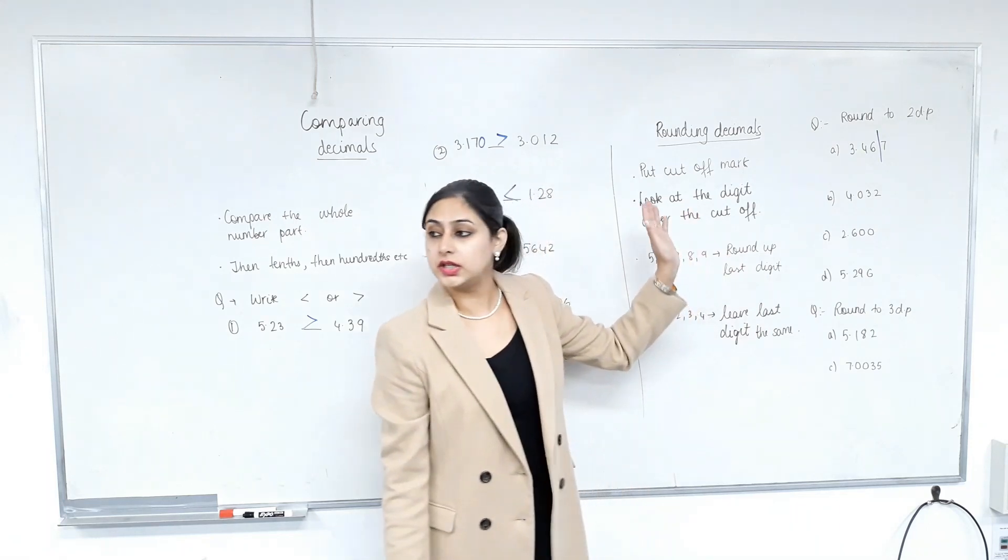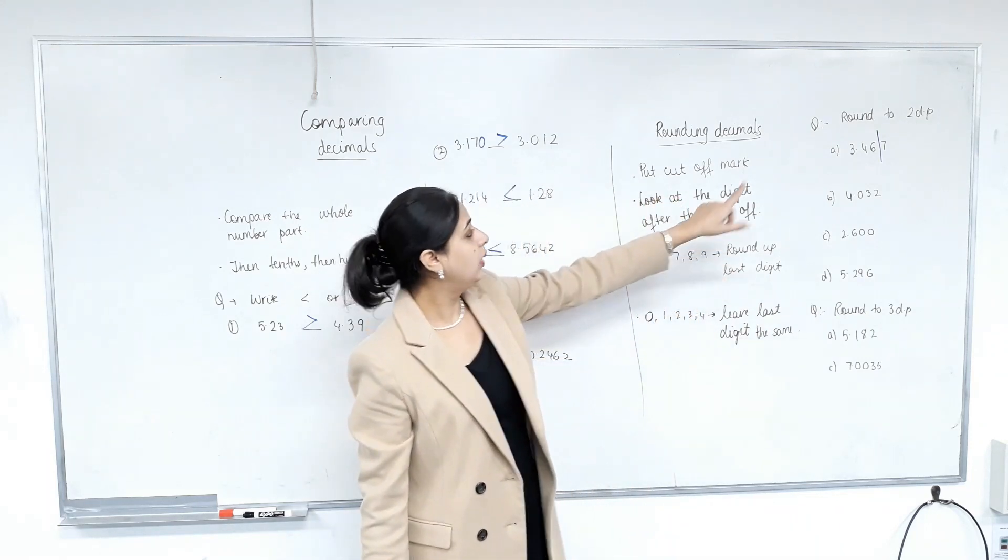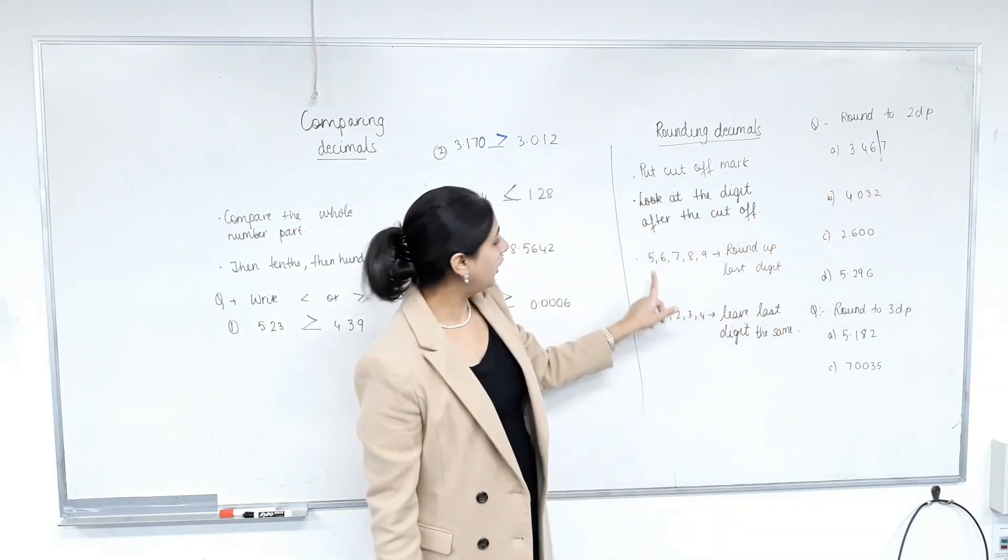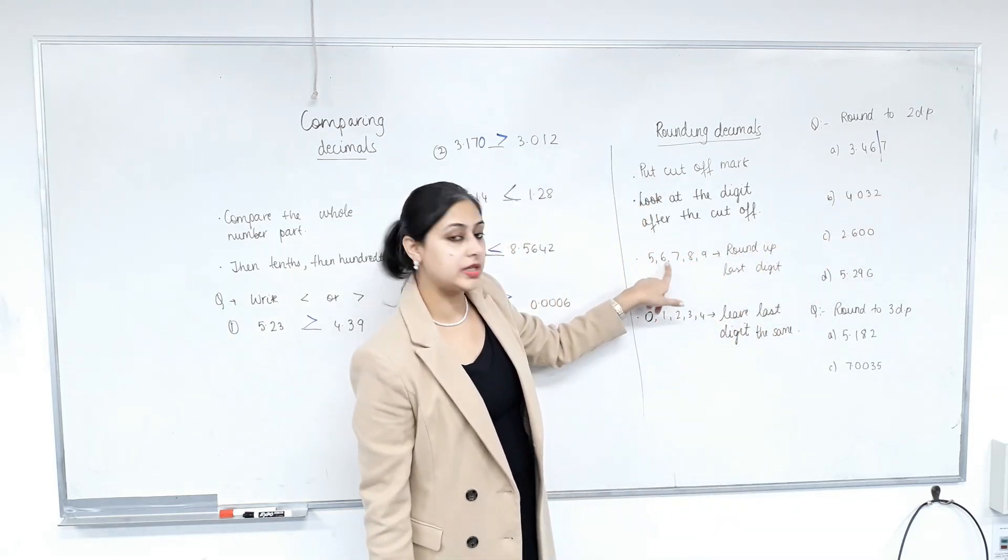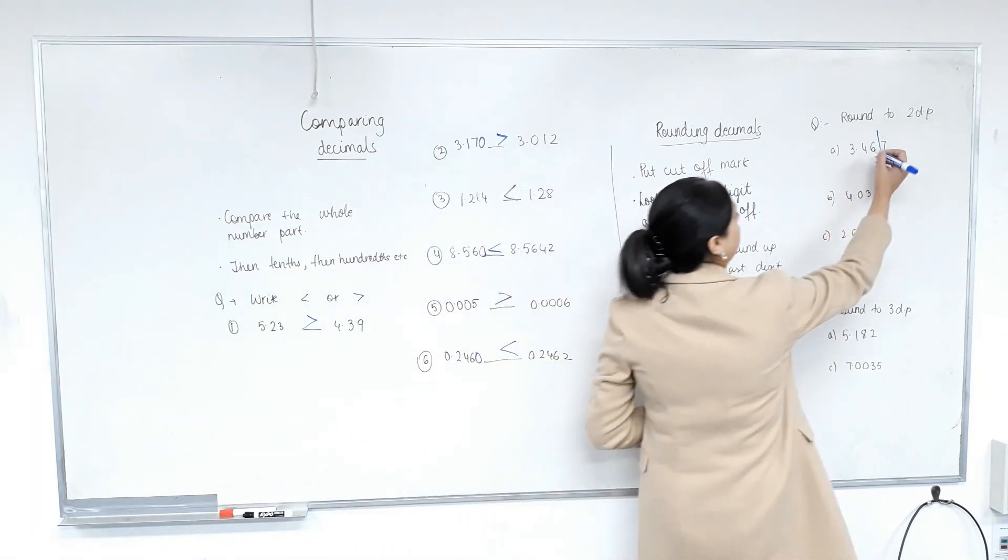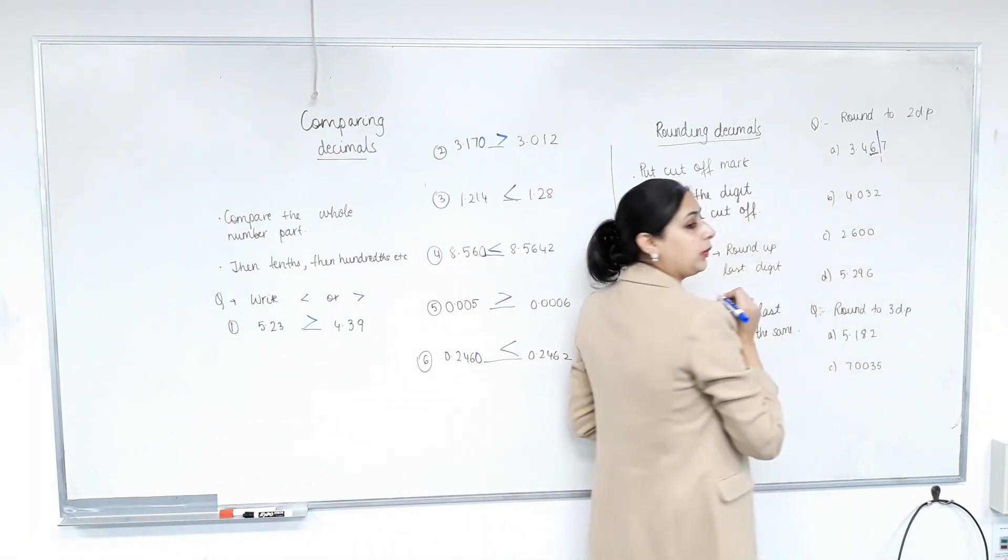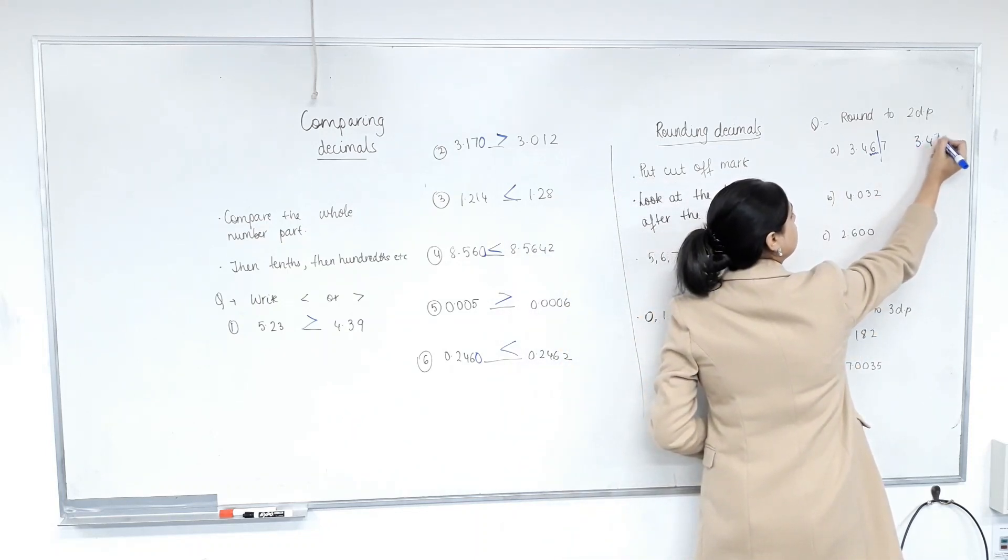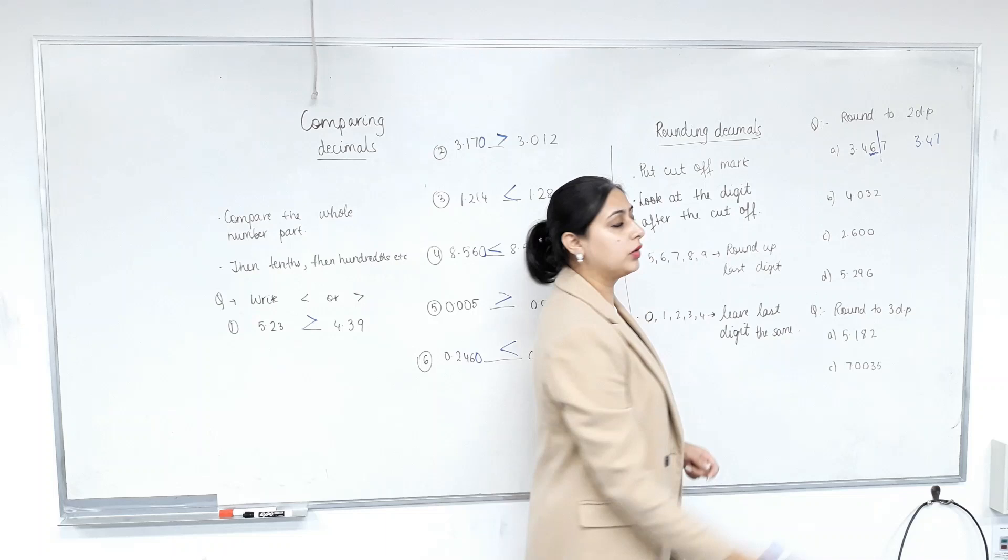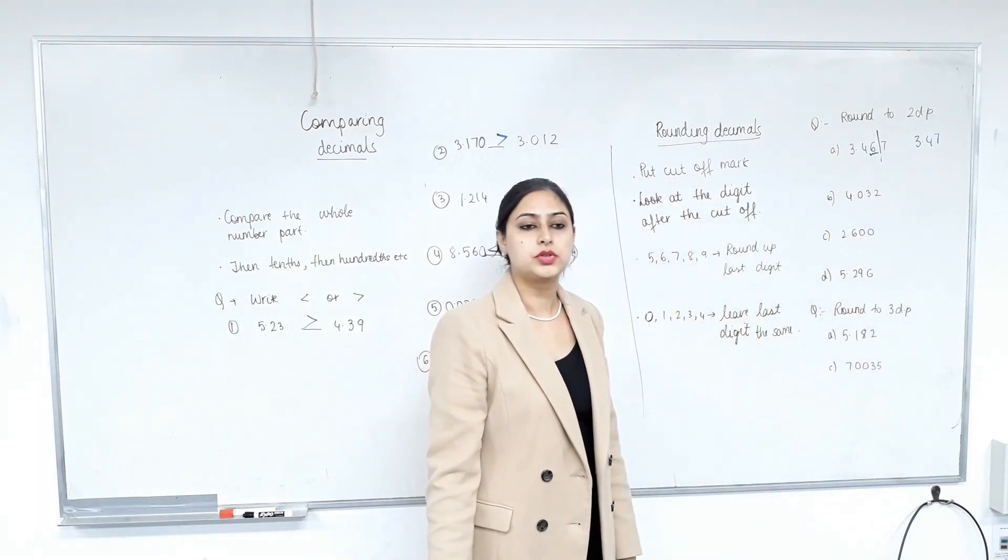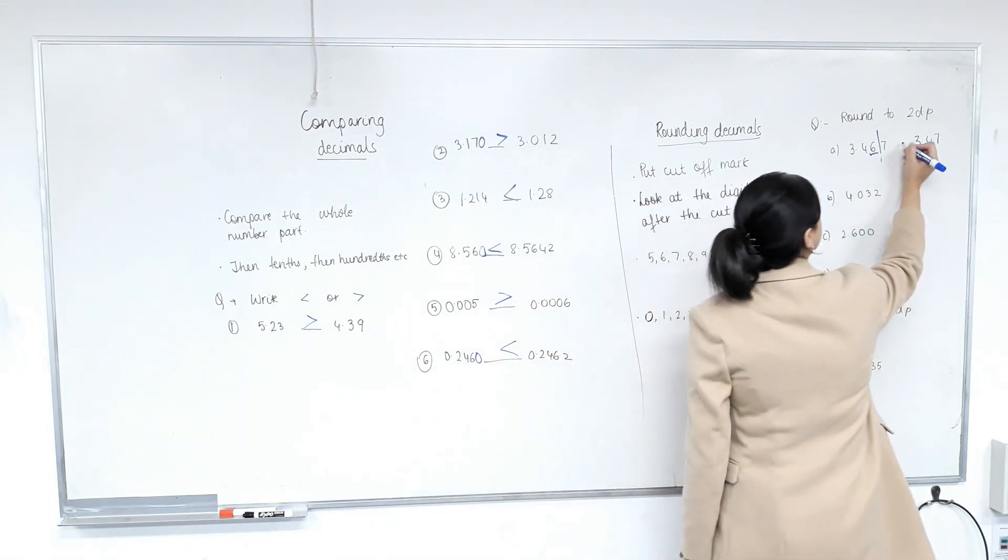Then, look at the digit after the cutoff mark. What's the digit after the cutoff mark? Seven. Now, if the digit after is 5, 6, 7, 8 or 9, you round up the last digit. Now, what does rounding up mean? You increase this by one. So what would this become? Three point four seven. Now, do I put an equal sign? No. Stop doing that, please.